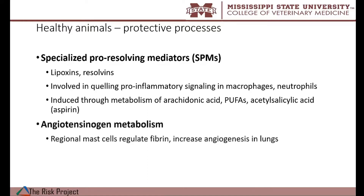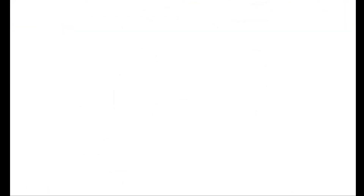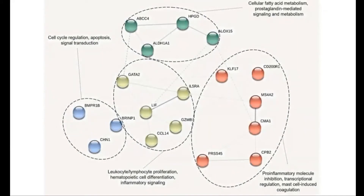These molecules are induced through the metabolism of arachidonic acid, polyunsaturated fatty acids, and acetylsalicylic acid — better known as aspirin. About 20 to 30 years ago, there was research looking at aspirin as an adjunct therapy with antimicrobial treatment for BRD, showing that aspirin decreased the frequency and cost of treatments. At the time, everyone thought it had to do with COX-2 modality, typical of non-steroidal anti-inflammatories. But more recent literature shows aspirin is actually inducing the production of these SPMs. Additionally, what we're finding in healthy animals involves angiotensinogen metabolism — genes associated with this mechanism relate to regional mast cells and their ability to regulate fibrin and increase angiogenesis within the lungs.